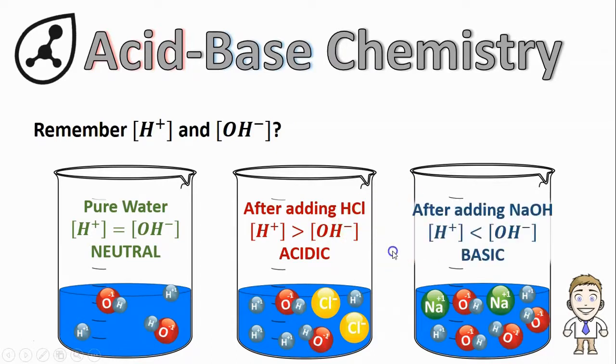The same thing in the last beaker except now we've added the base sodium hydroxide. Sodium hydroxide, a base, ionizes to produce extra OH- making the OH- concentration greater than the H+. That's what makes the solution basic.